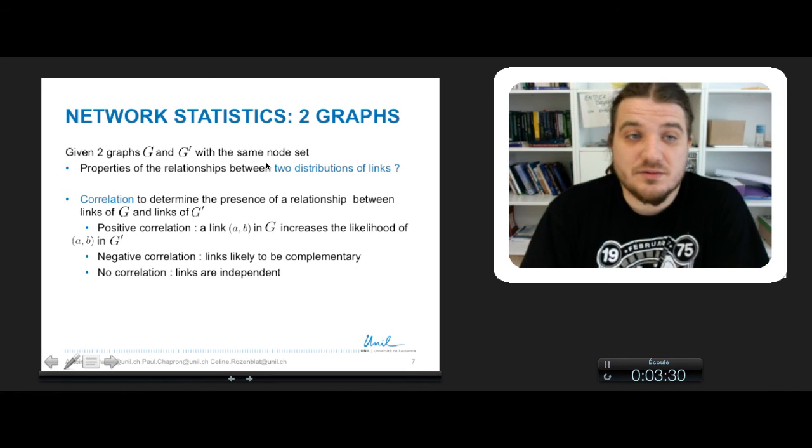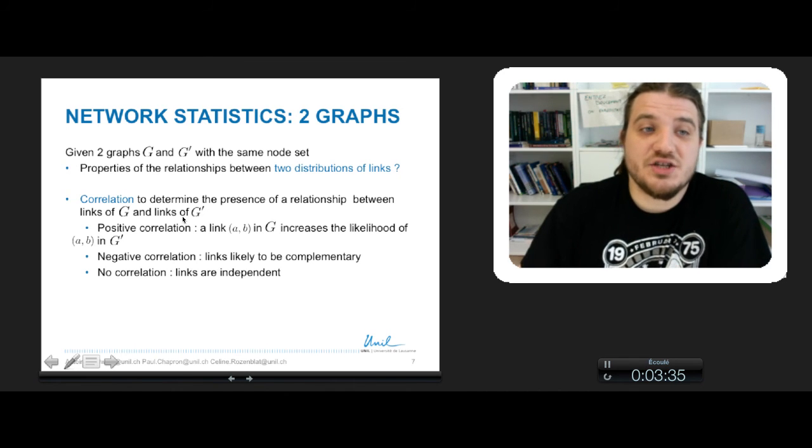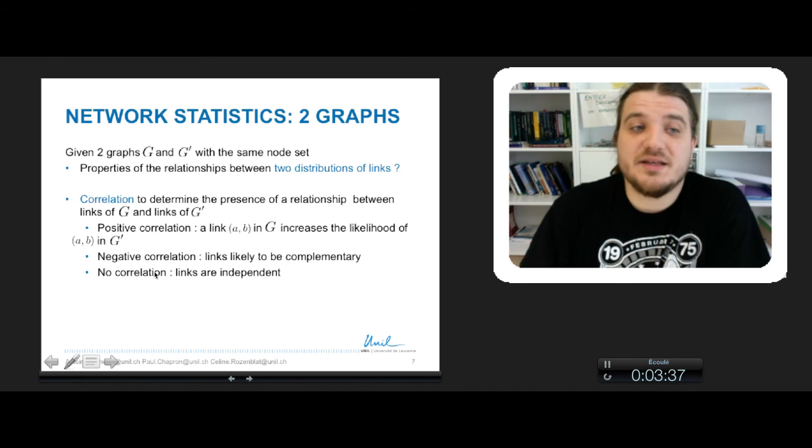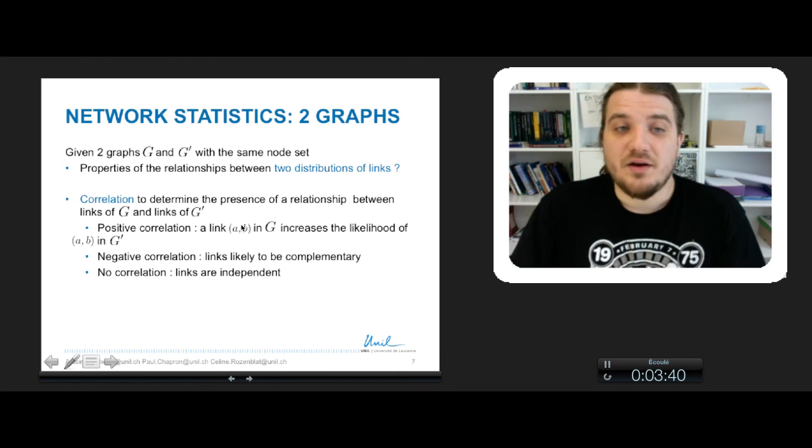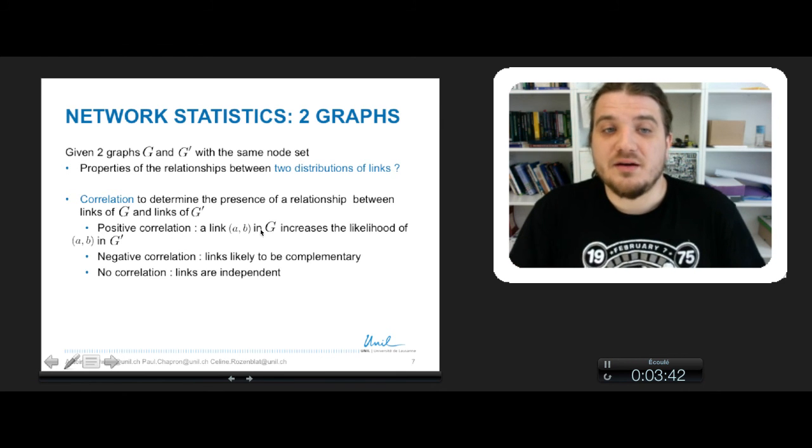So basically, correlation will help us to determine if there is a relationship between the links of G and the links of G'. In case of positive correlation, a link AB between the nodes A and B of G, the presence of this link will increase the likelihood of seeing the same link between A and B in G'.